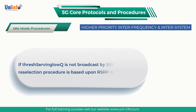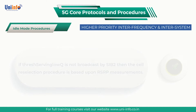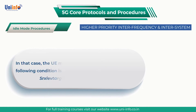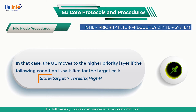If the threshold serving low quality is not broadcast by SIB2, then the cell reselection procedure is based upon RSRP measurements. In that case, the UE moves to the higher priority layer if the following condition is satisfied for the target cell: S-Rx level target is greater than threshold high priority.